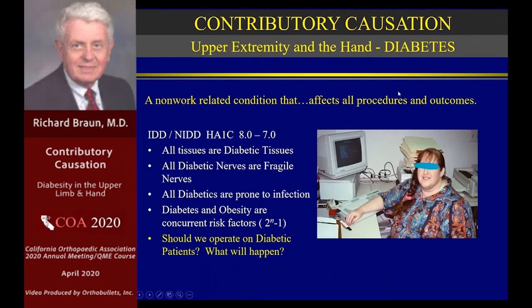Here's a patient we'd like to present. In dealing with insulin-dependent and non-insulin-dependent patients, it's important to preoperatively prep these patients and drive the HbA1C down below 8 — somewhere between 7 and 8 is tolerable, and 7 and below is wonderful. Non-insulin-dependent diabetics will generally do better. But in all of these people, there are certain things we just have to accept: all the tissues are diabetic tissues, not normal tissues. All diabetic nerves are fragile nerves.